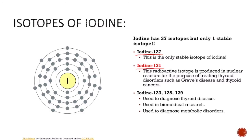Iodine-131 is one of those very handy iodine isotopes. It is produced in nuclear reactors for treating thyroid disorders such as Graves' disease and thyroid cancers. A few other iodine isotopes that are useful in the medical industry are iodine-123, 125, and 129. These are used in biomedical research and to diagnose metabolic disorders and thyroid disease.